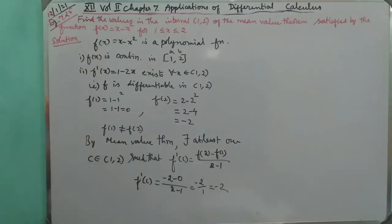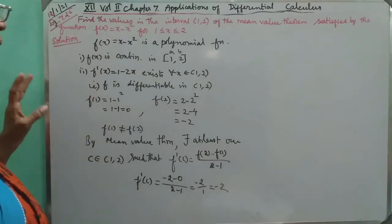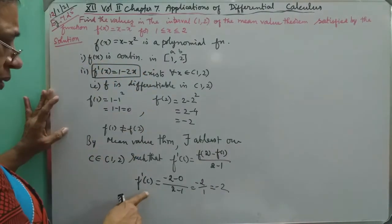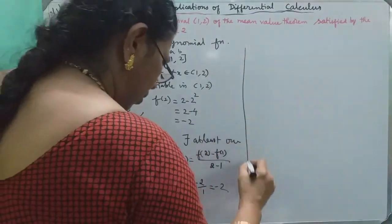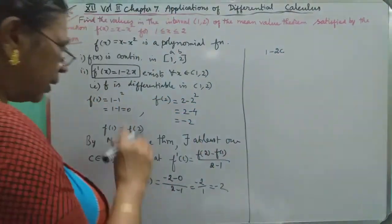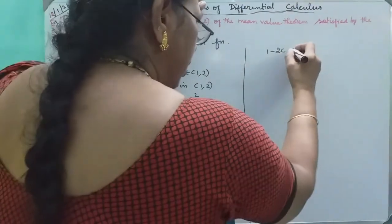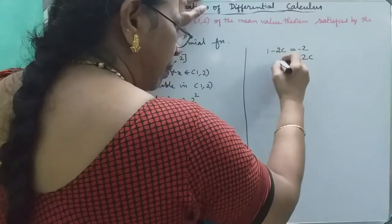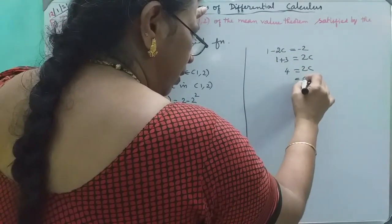We have the derivative value. Now we substitute: f prime of c is 1 minus 2c. We can substitute, so 1 minus 2c is equal to minus 2. Then 2c is equal to 3, and c is equal to 3 by 2.